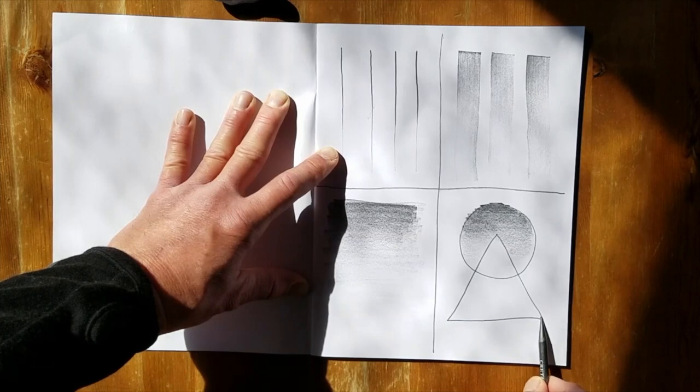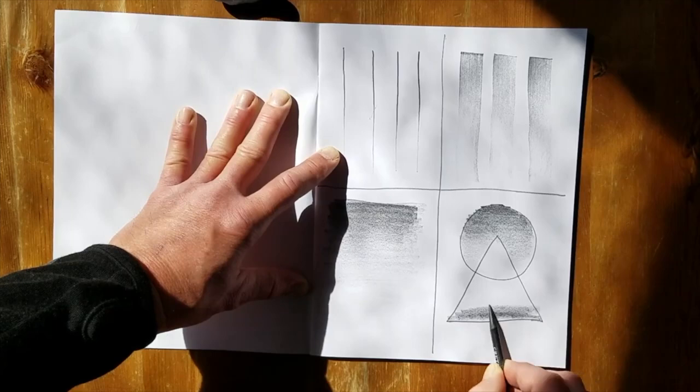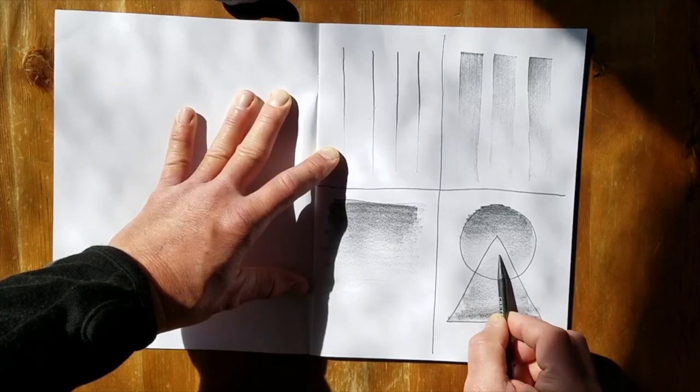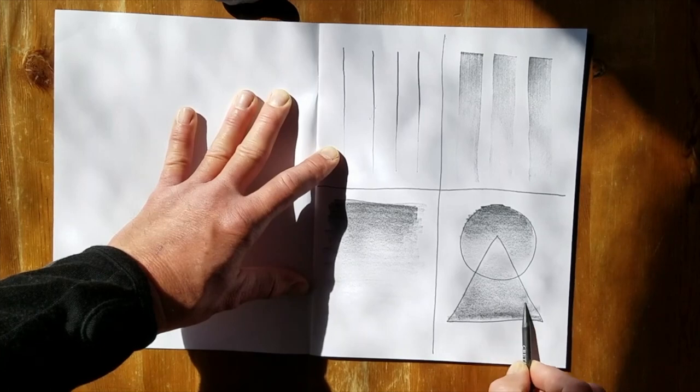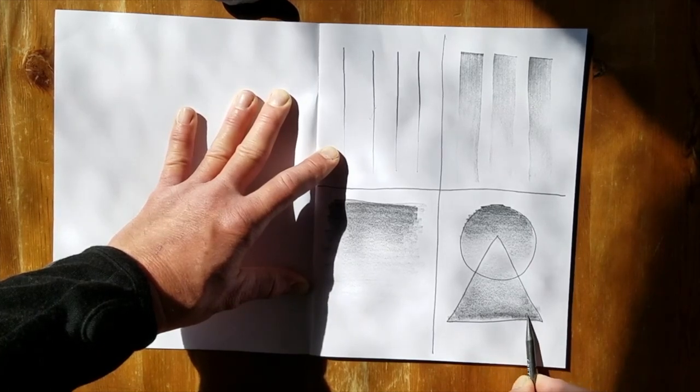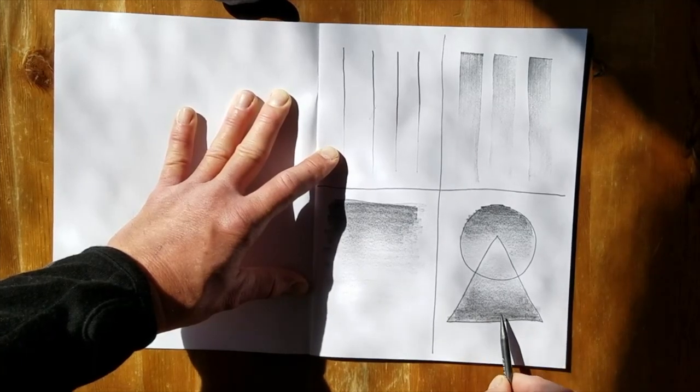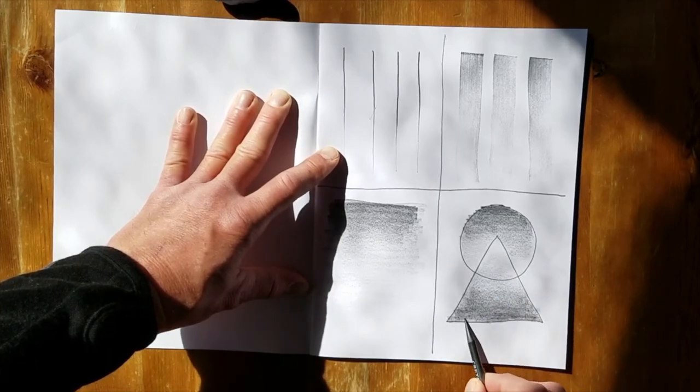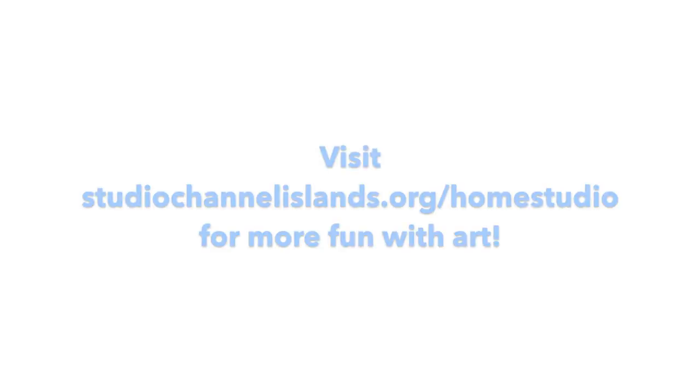And then we're going to come back up from the bottom. We're going to go dark on the bottom. We're going to go light, so you can go back in and fill in some of these areas that are uneven. The idea is to gradiate from dark to light.